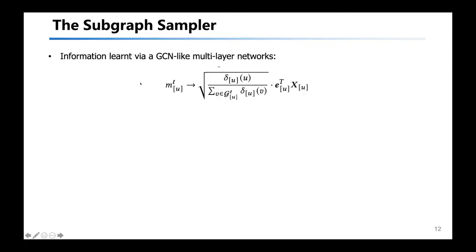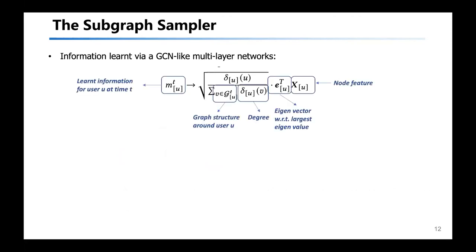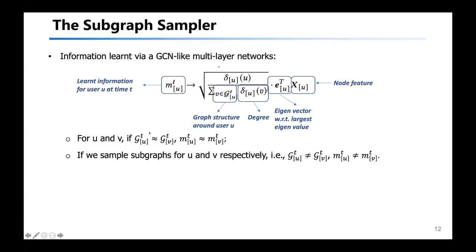To show the effect of the subgraph sampler, we first analyze the information learned for each user via a GCN-like multi-layer network. We show that the information learned for each node converges to a value that is a function of the graph structure and the range of neighborhood aggregation. By simple analysis, if we do not constrain the range of neighborhood aggregation, as the number of GCN layers grows, the range of neighborhood aggregation tends to become similar across nodes, leading to very similar and undistinguishable learned embeddings. But if we sample different subgraphs for different nodes, we can guarantee distinguishable and informative user embeddings.